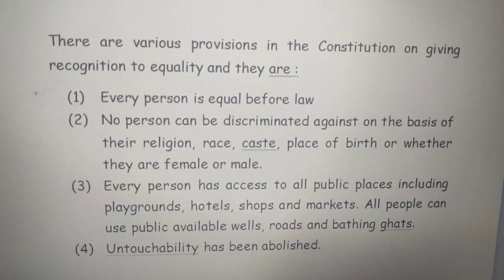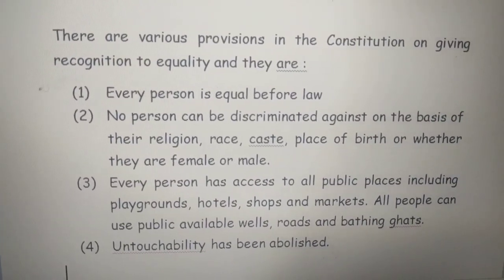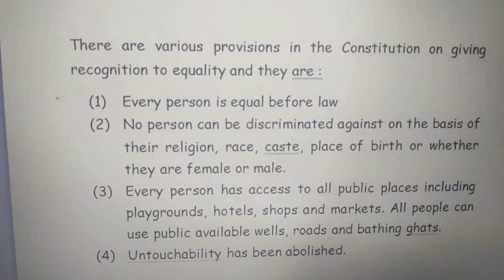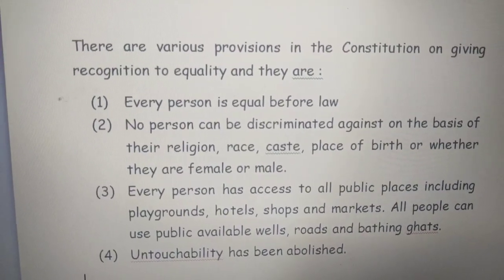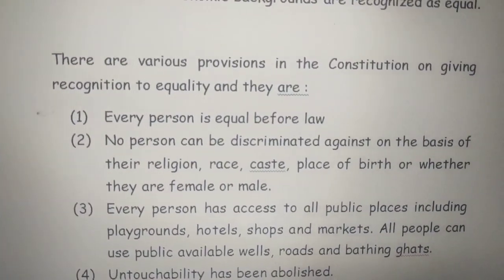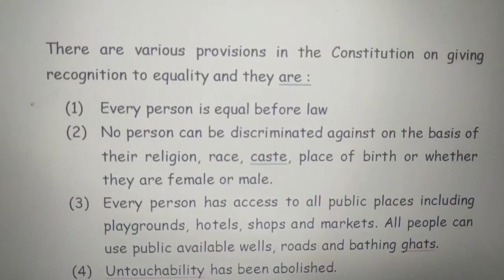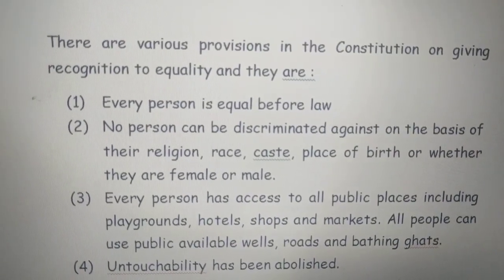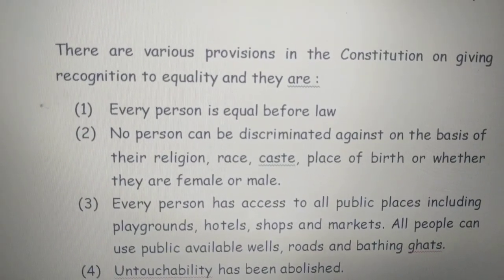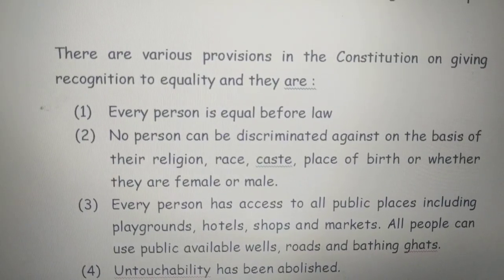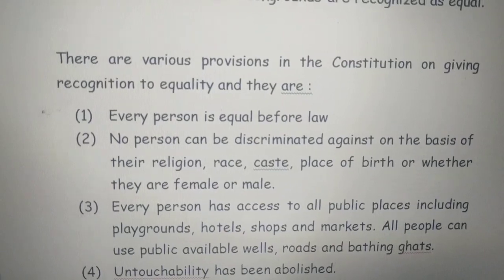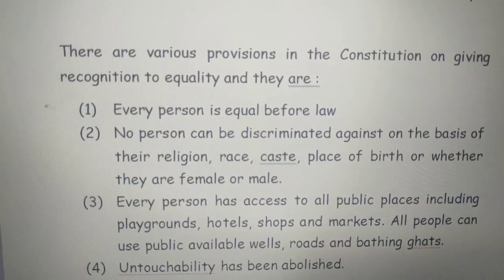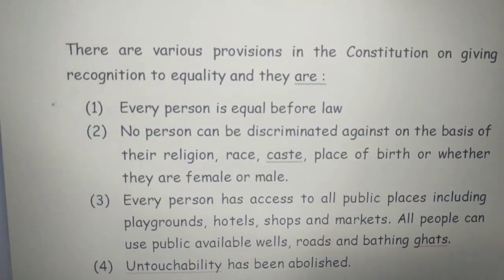There are various provisions in the constitution giving recognition to equality. The first is that every person is equal before the law — no matter what a person may be, whether the president, prime minister, an actor, a sports person, a domestic servant, a teacher, or a doctor, all are equal. No person can be discriminated against on the basis of their religion, race, caste, place of birth, or whether they are female or male. The Ansaris faced discrimination because they followed a particular religion, and Om Prakash Valmiki faced discrimination because he belonged to a particular caste — but according to the law, people are equal.